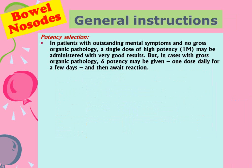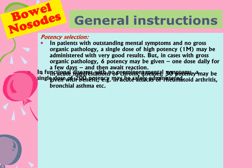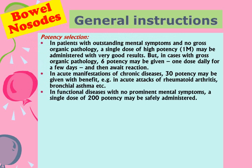For general instructions on potency selection: in patients with outstanding prominent mental symptoms and no gross organic pathology, a single dose of high potency 1M may be given with good results. In cases with gross organic pathology and advanced tissue changes, 6th potency (low potency) may be given one dose daily for a few days, then wait 2-3 days for reaction. In acute manifestations of chronic diseases, 30th potency may be given.